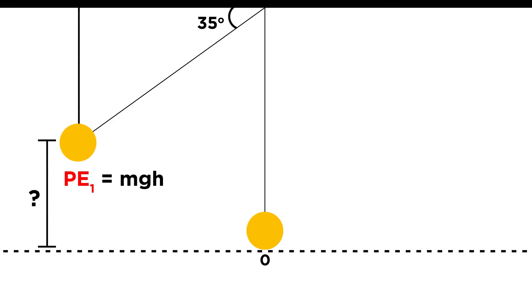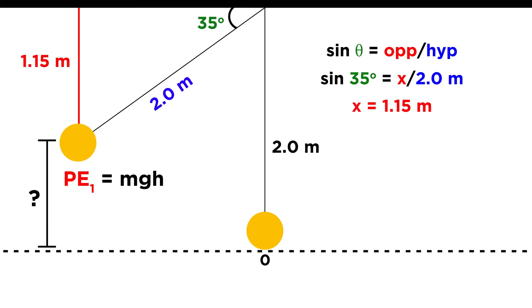We have this angle, thirty-five degrees, and we have the hypotenuse, as the string length is always equal to two meters. We want to know this opposite side, which we can get by using sine. Sine theta is opposite over hypotenuse. So sine of thirty-five equals this distance x over two. We evaluate the sine, multiply by two, and we get one point one five meters.